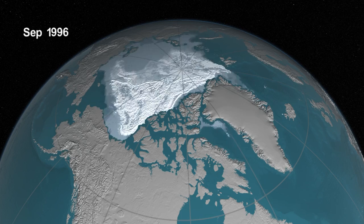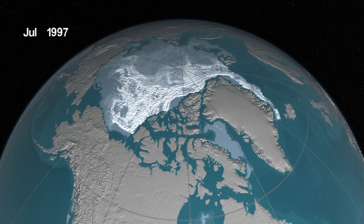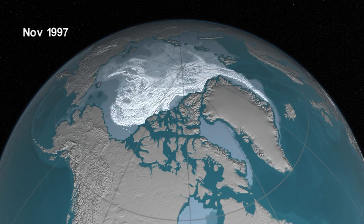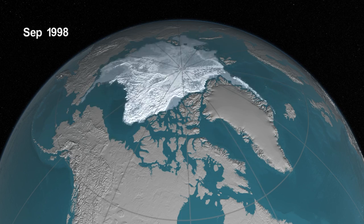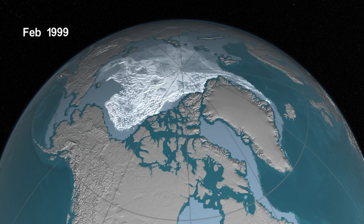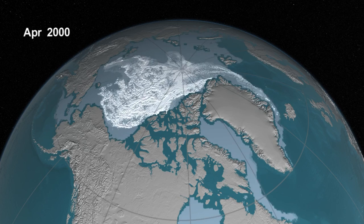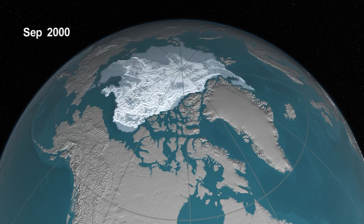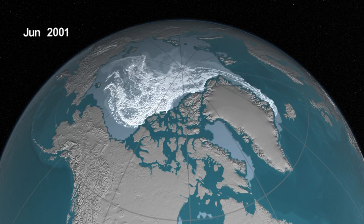But in recent years, we've seen less replenishment. There's been more melt during the summer, and so the ice that goes out through Fram Strait has not been compensated by the ice growth.